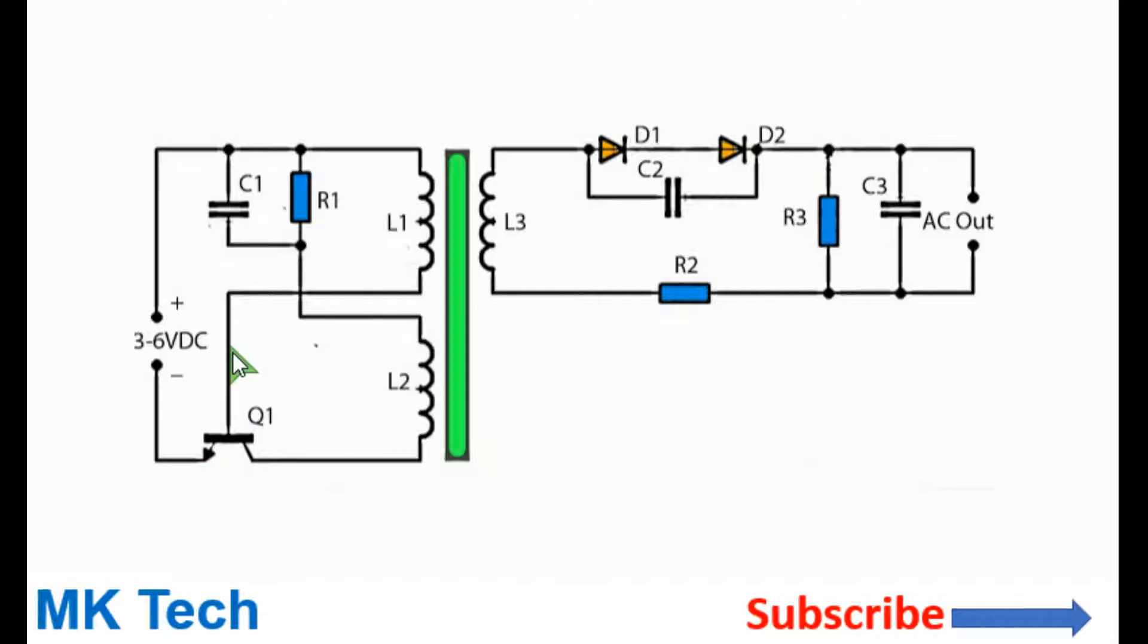The connections are shown here. Initially the transistor will turn on because current will flow from the positive rail through L1 to its base. This will cause current to flow from the positive rail through the resistor R1, through the primary winding L2, through the collector, through the emitter to the positive rail.